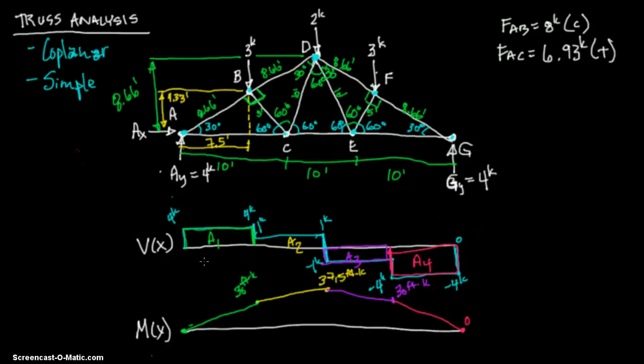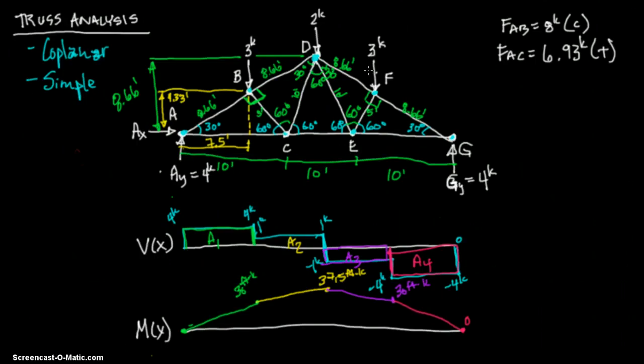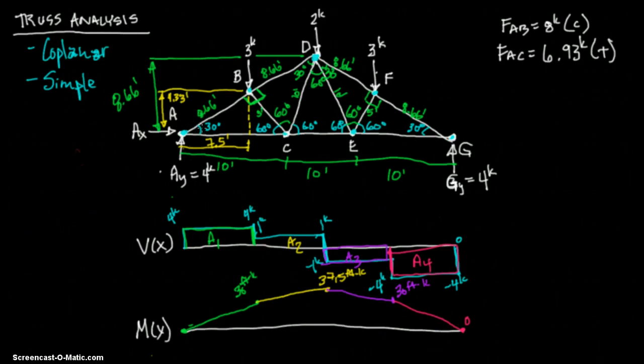Welcome to Simple Truss Analysis Part 4. We're going to continue on. We last left off getting the internal forces, force AB and force AC, at joint one. And now we're going to move on to joint B.